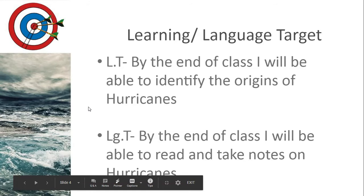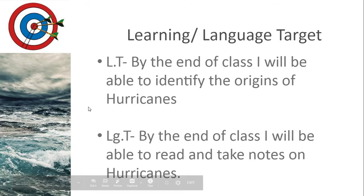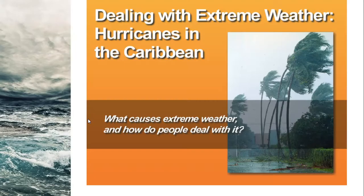Today's objective is: by the end of class, you'll be able to identify the origins of a hurricane, and you'll be able to read and take notes on hurricanes with the focus on storm preparation. How do people prepare for these storms? How are the people in the Caribbean preparing, as well as people in the United States? And remember, this all goes back to our essential question: what causes extreme weather and how do people deal with it?